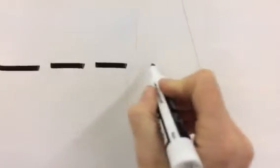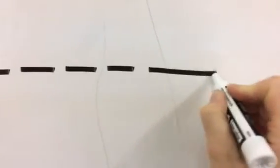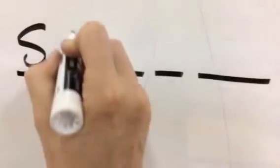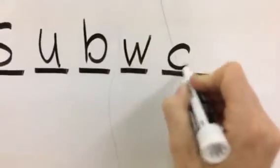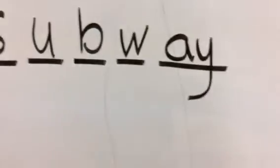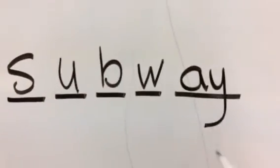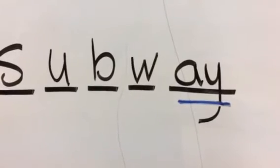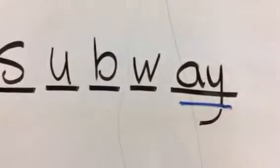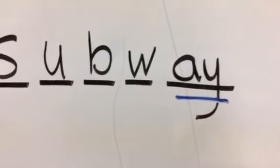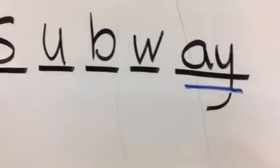Five is subway. S-U-B-W-A-Y. A-Y makes the sound A and it's found at the end of a word. A-Y comes at the end of a word or syllable.